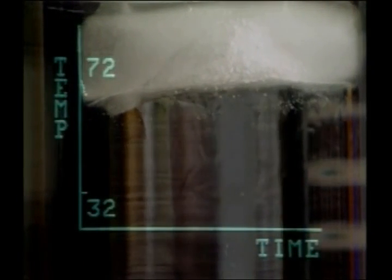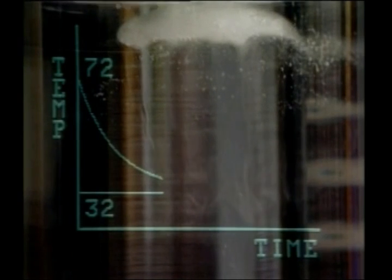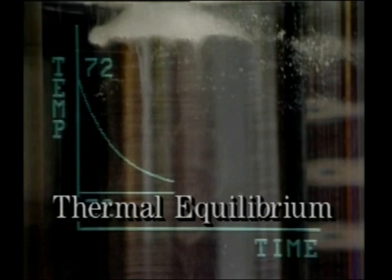We can plot the temperatures of the ice and water on a temperature-time graph. As the water transfers its heat to the ice, the ice melts and the temperature of the water decreases. The rate of the temperature decrease slows down as the water temperature approaches the temperature of the ice, 32 degrees. This indicates that the rate of heat transfer is slowing down. As the ice continues to melt, the ice-water mixture approaches thermal equilibrium.